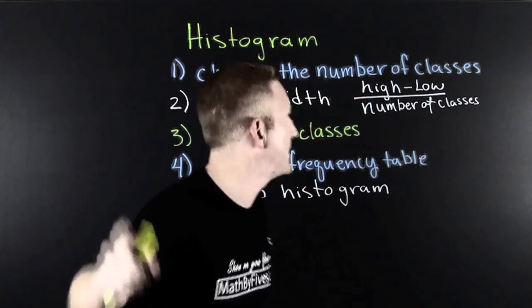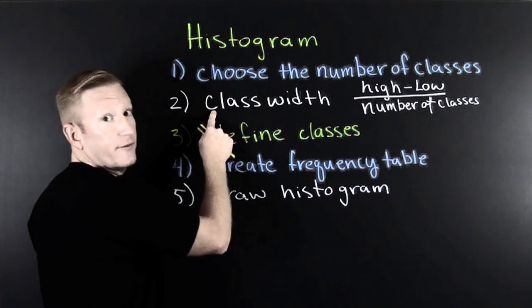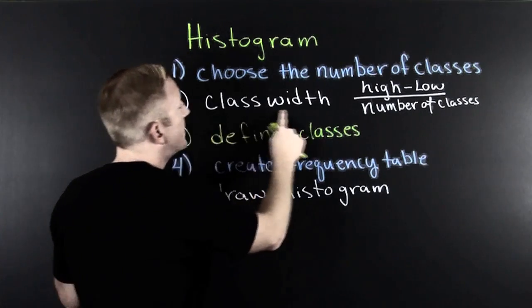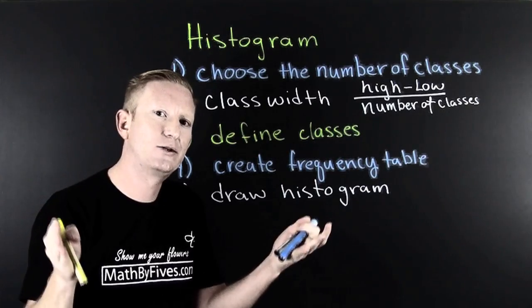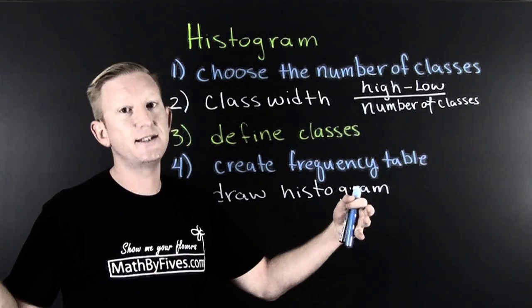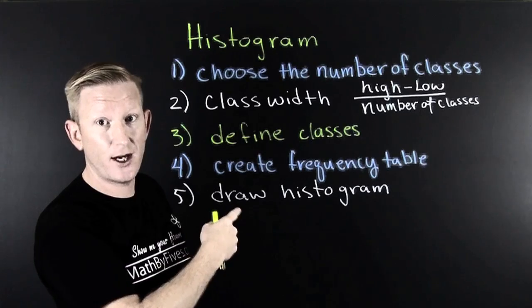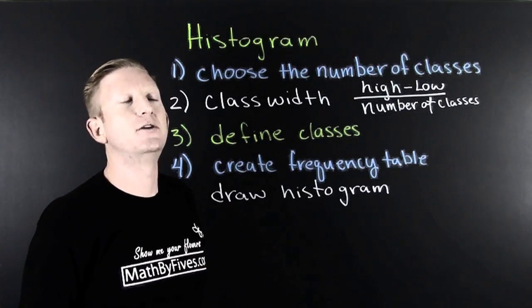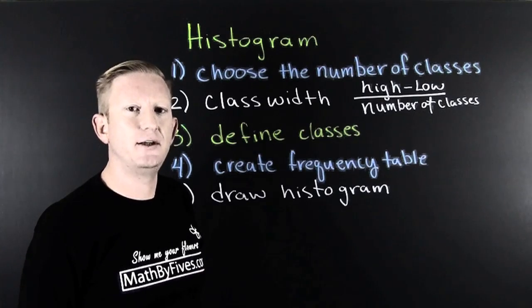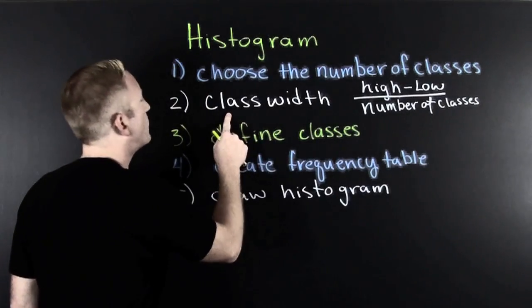So, we choose the number of classes. After we do that, it's an art form. We're going to define the class width so that we can have evenly spaced categories, so that each category has the same width. Now, this is the right way to create a histogram. Your book might do it another way. And hopefully, I can make this video robust enough to be book independent, but for now, we're doing it the right way.